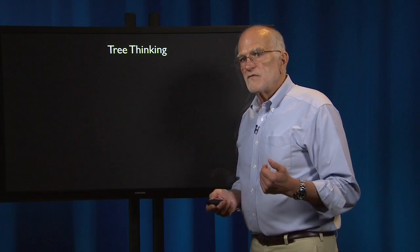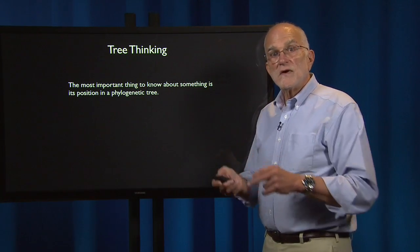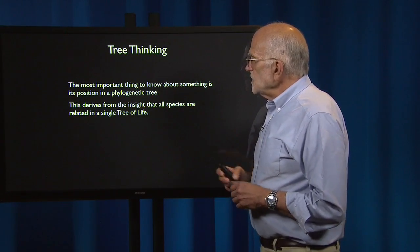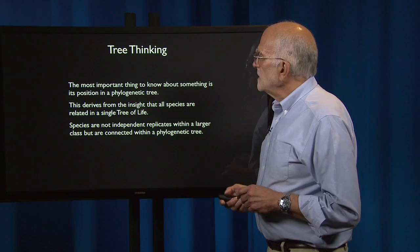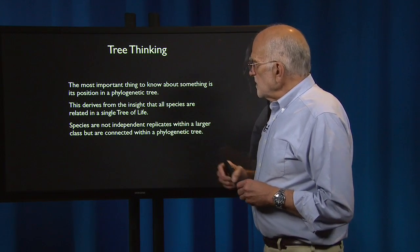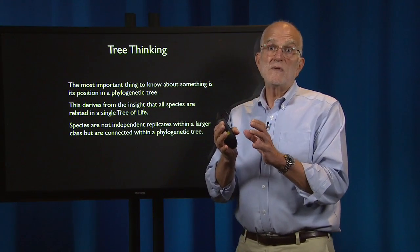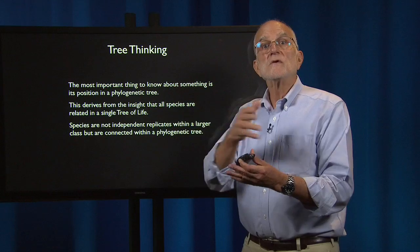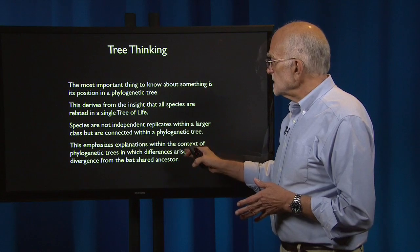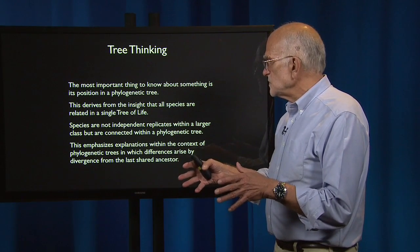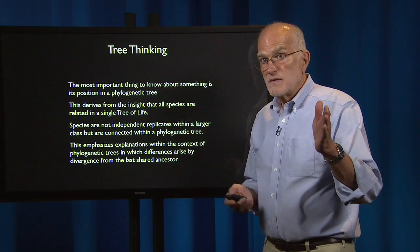Now, what about tree thinking? If one is engaging in tree thinking, the most important thing to know about something is where it sits on a phylogenetic tree. This derives from the insight that all species are related in a single tree of life. Species are not independent replicates within a larger class but are connected within a phylogenetic tree, meaning that many properties of descendants are inherited from ancestors.